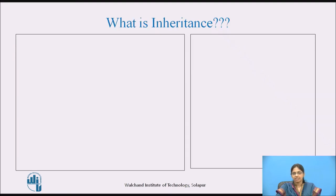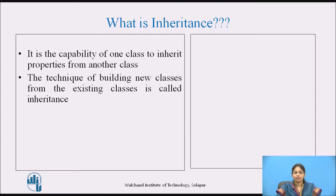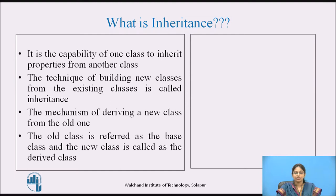Let us see what inheritance is. A set of definitions are given which explain what is meant by inheritance. It is the capability of one class to inherit the properties from another class. The technique of building new classes from existing classes is called inheritance. The mechanism of deriving a new class from the old one is also called inheritance. The old class is referred to as the base class and the new class is called the derived class.